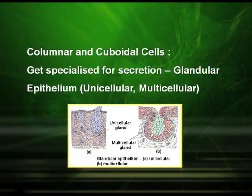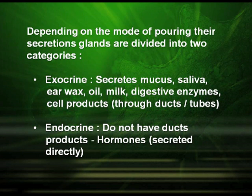Columnar and cuboidal cells get specialized and act as glandular epithelium, which may be unicellular or multicellular. Depending on the mode of secretion, they are divided into two categories: the exocrine glands, which secrete mucus, saliva, and earwax through ducts; and the endocrine glands, which do not have ducts and whose products are called hormones, which are directly secreted into the bloodstream.